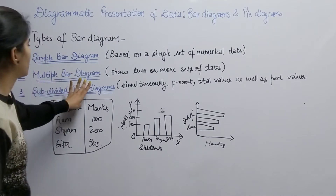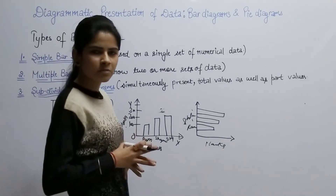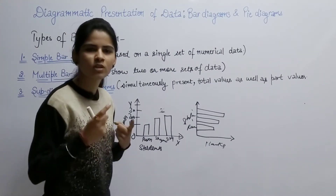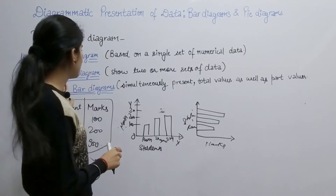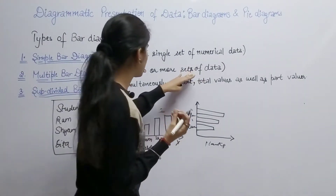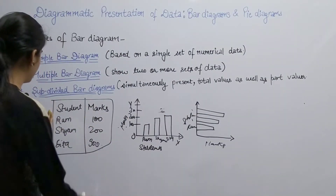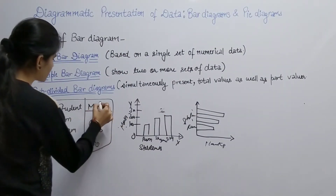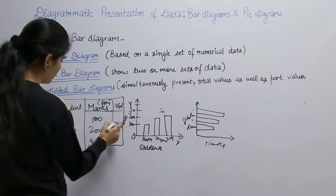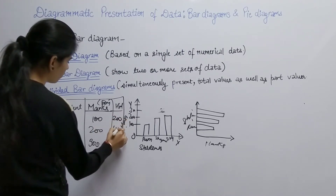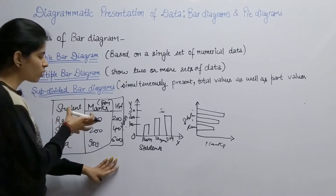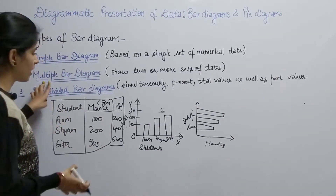What is a multiple bar diagram? While a simple bar diagram is based on a single set of numerical data, a multiple bar diagram represents two or more sets of numerical data. Continuing with our example, the marks are in English and we have also added marks in Hindi: 200, 400, and 600. We have to represent this data in multiple bar diagrams.